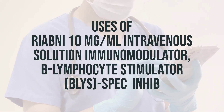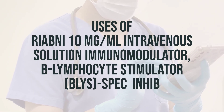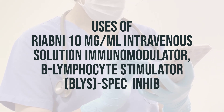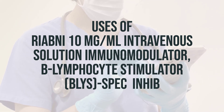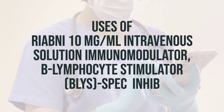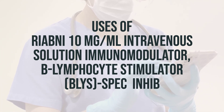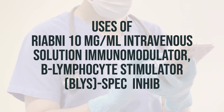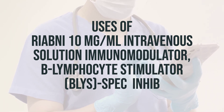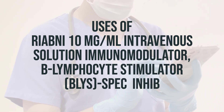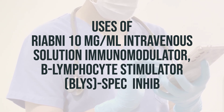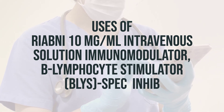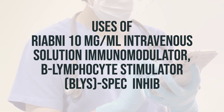Reabni 10 mg per mL intravenous solution is an immunomodulator and B-lymphocyte stimulator (BLyS) SPEC inhibitor. It is used to treat certain types of cancer such as non-Hodgkin's lymphoma and chronic lymphocytic leukemia. It works by slowing or stopping the growth of cancer cells.